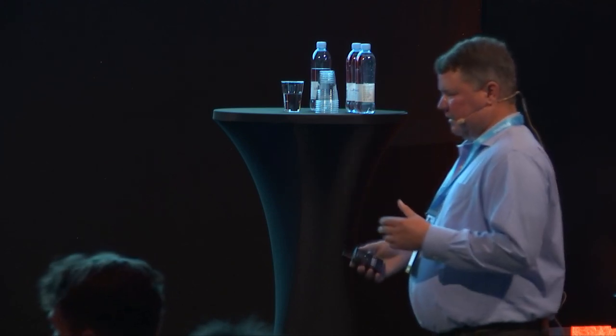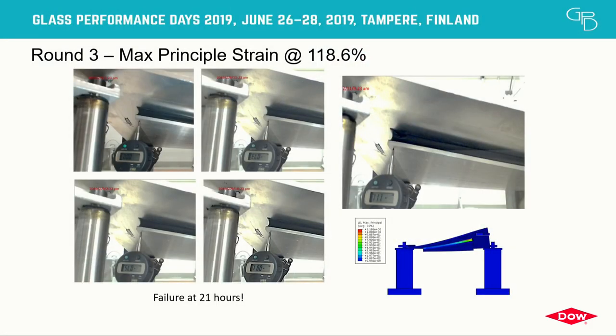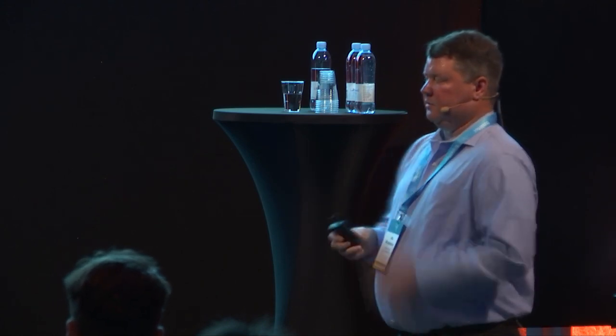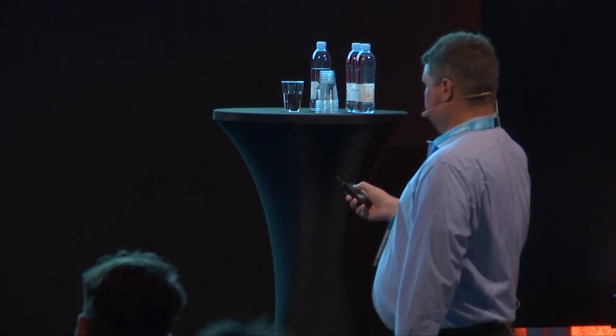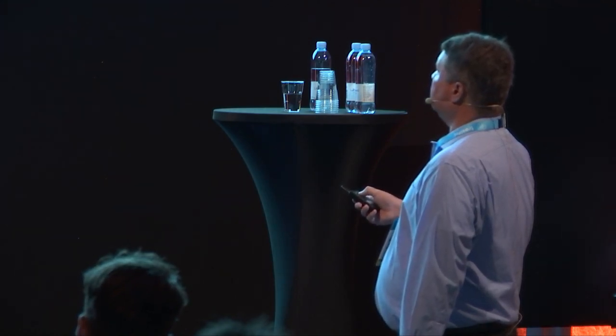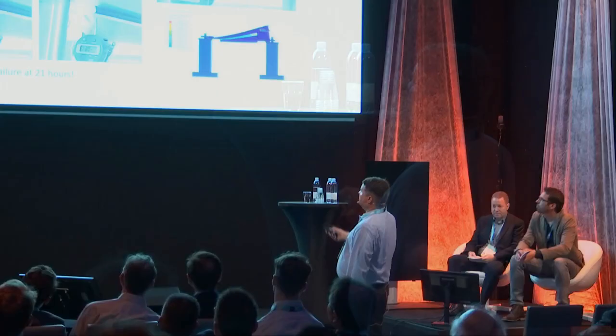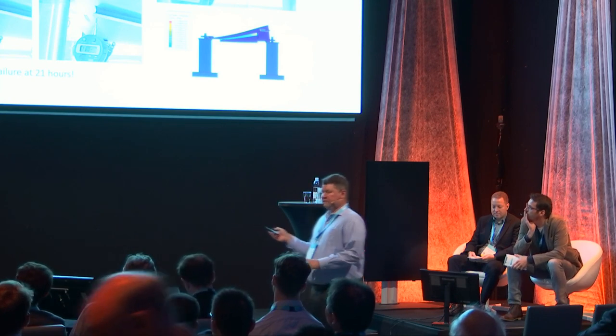For round three, we had one data point — with two we can draw a line and make assumptions. So we increased the max principal strain a bit, to between our known data point and the immediate failure point. At around 118% max principal strain — an odd number because we're using a coarse hand jack adjustment — the unit failed at 21 hours. Now we have two data points and can draw a line, and with a third we can hopefully establish whether there's a logarithmic relationship.